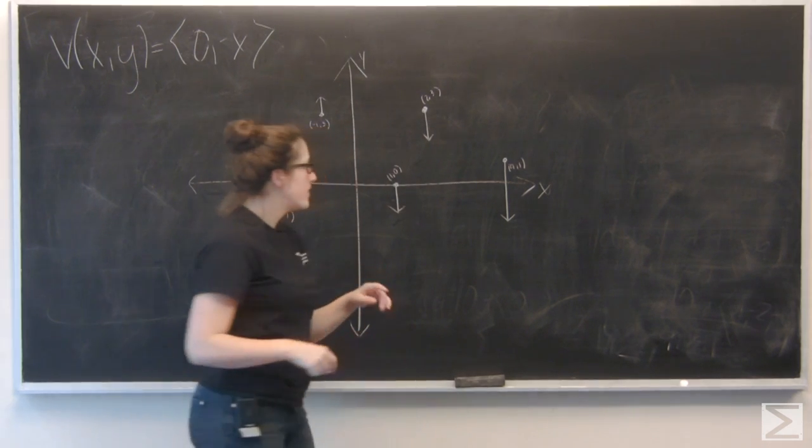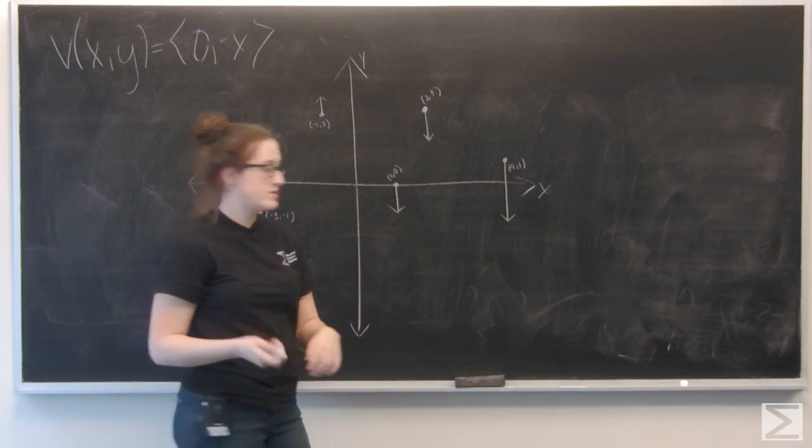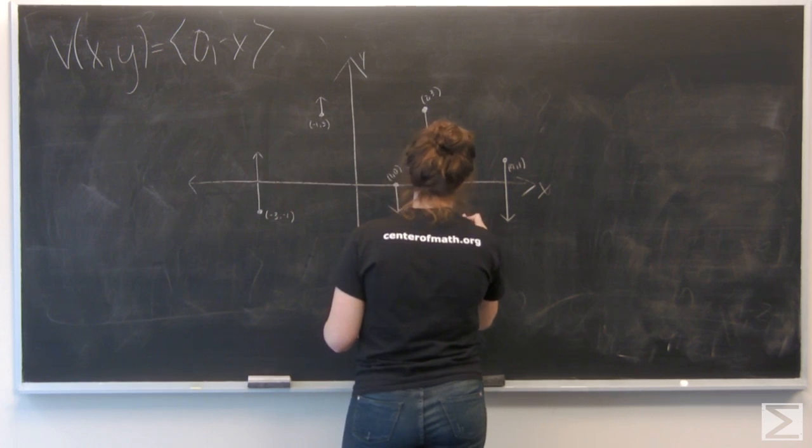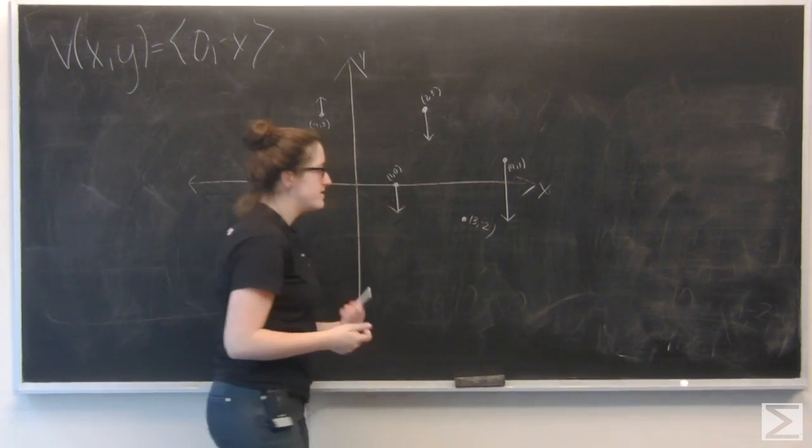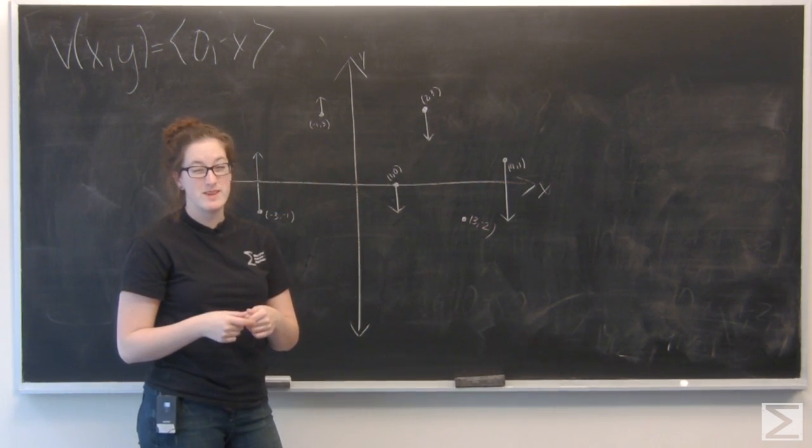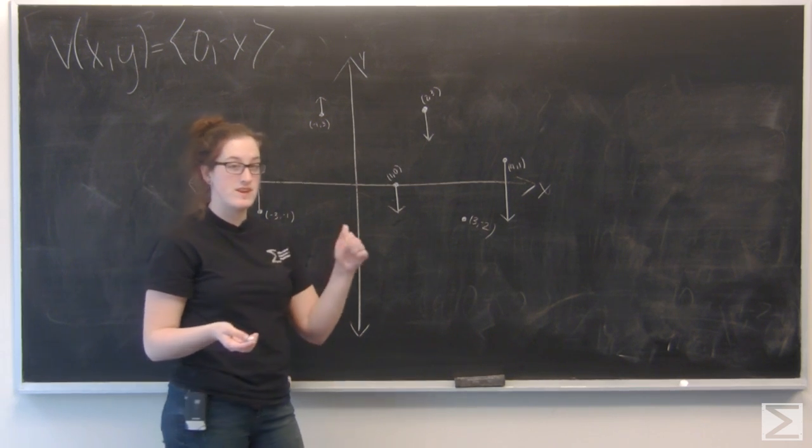Okay, let's try one more, how about 3, negative 2. Again, i is 0, j is going to be the opposite of my x value, so negative 3.